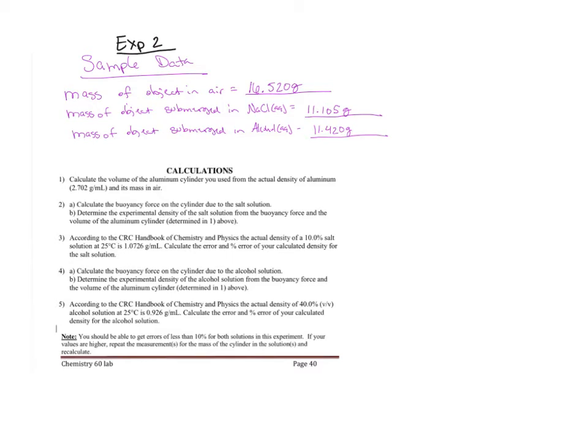For experiment number two, the data you should have recorded includes the mass of the object in air - my number is 16.520 grams, three digits past the decimal, units of grams. Mass of the object submerged in our saltwater solution, also called NaCl aqueous, my number is 11.105 grams. And the mass of the object submerged in alcohol aqueous, which is 11.420 grams.